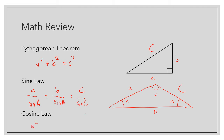Cosine law states that a squared is equal to b squared plus c squared minus 2bc cosine of A. This would be used if you have a side, an angle, and a side — or if you know all three sides. So if you know the values of a, b, and c and you're trying to find any angle, you can use this. Or if you know two sides and the included angle.